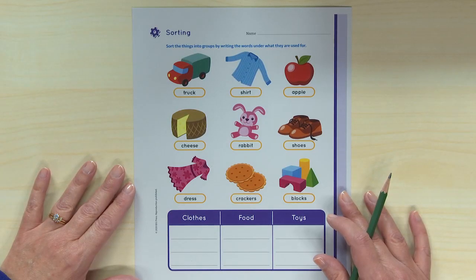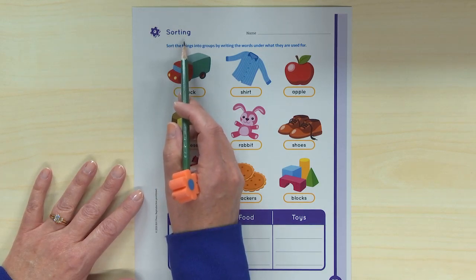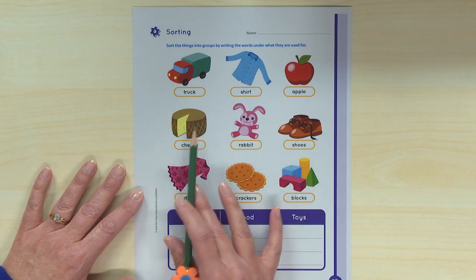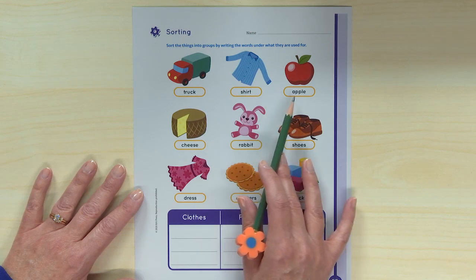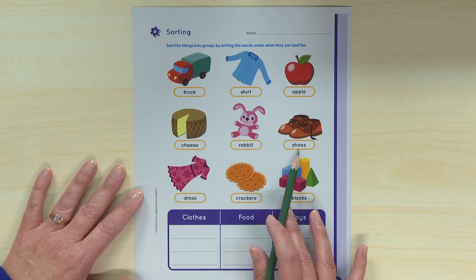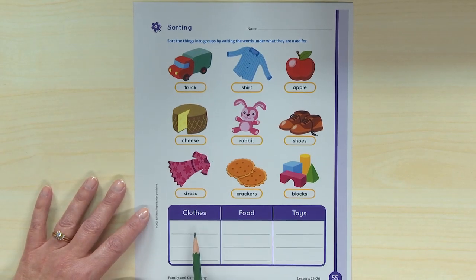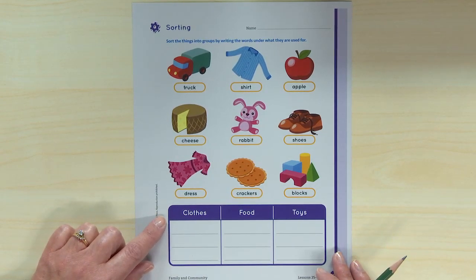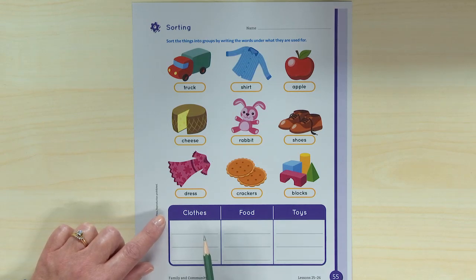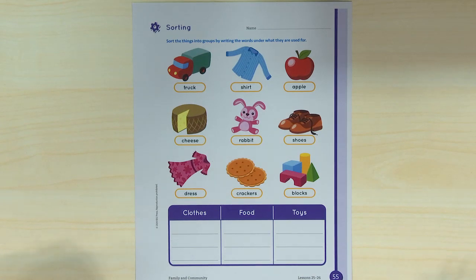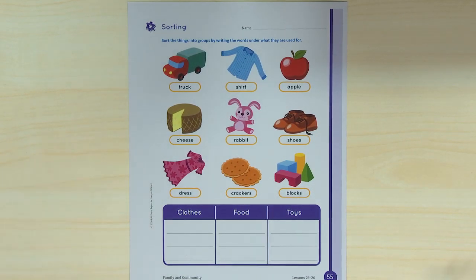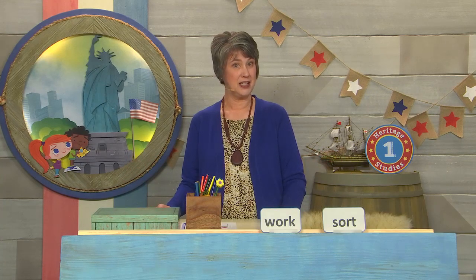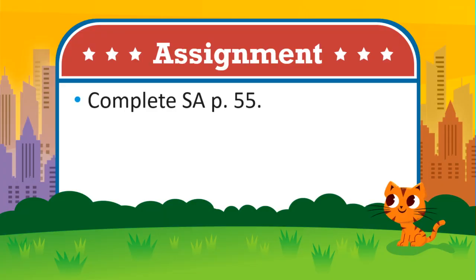This is page 55, which goes along with our skill of sorting. The directions say to sort the things into groups by writing the words under what they are used for. You have pictures of a truck, shirt, apple, cheese, rabbit, shoes, dress, crackers, and blocks. The categories are clothes, food, and toys — three items in each group. Have fun with the sorting activity! In our next lesson we'll listen to a poem about the people who work so we can have bread to eat.